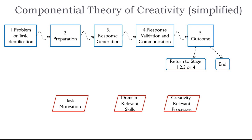The second concept is that the theory nominates three components which can influence creative performance: task motivation, domain-relevant skills, and creativity-relevant skills. An in-depth analysis of what each component incorporates will be provided later in this video, so if something is not clear now, hopefully it will be clarified shortly. The theory demonstrates how the stages of the creativity process and the components which influence creative performance relate to one another.